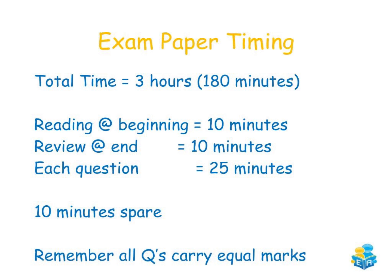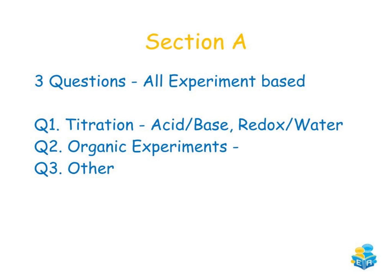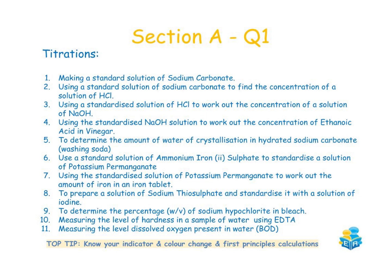Let's take a look at the paper layout and what topics come up in each question. Section A consists of three questions and they are all experiment based. Question one will always be a titration. Question two will always come from your organic chemistry experiments, and question three I label as 'other' because any of the other experiments can come up in that question. Looking at question one in section A, it is your titrations question, and here I've listed all the possible questions that could come up.